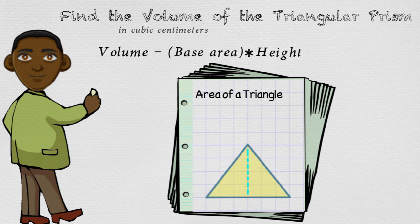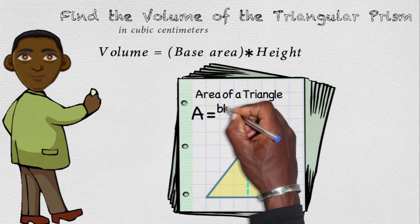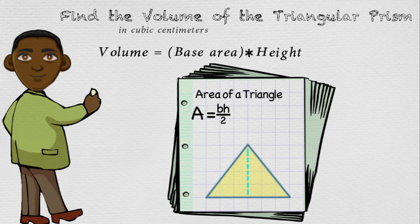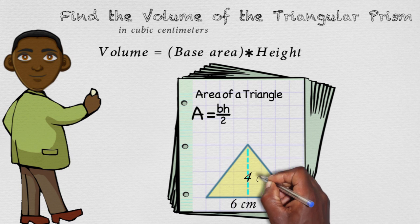To find the area of that base, we must use the formula base times height divided by 2, because that's the formula for the area of any triangle. So the base of our triangle has a length of 6 centimeters. The height of our triangle is 4 centimeters.